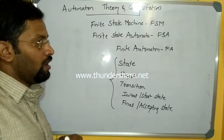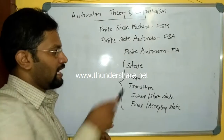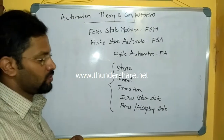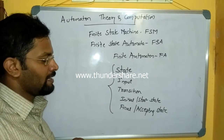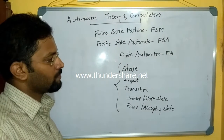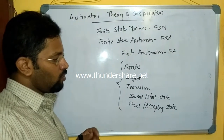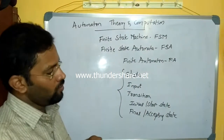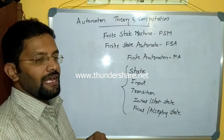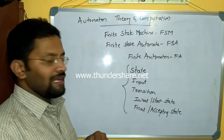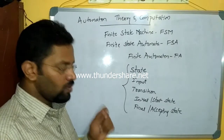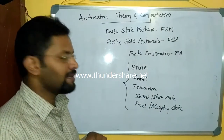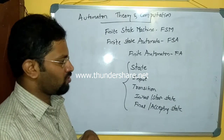As soon as I say automata, I should have: state, input, transition, initial or start state, and final or accepting state. One more thing to specify — when I talk about input, transition would happen on some input, but there could be some modification also.